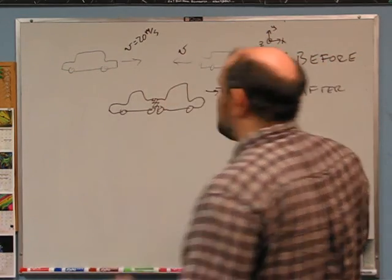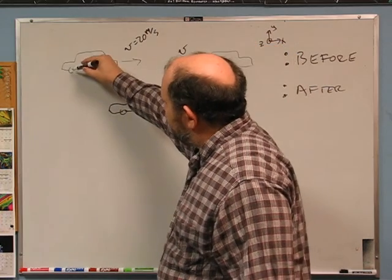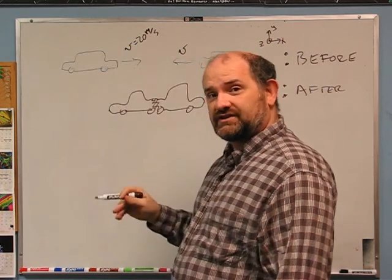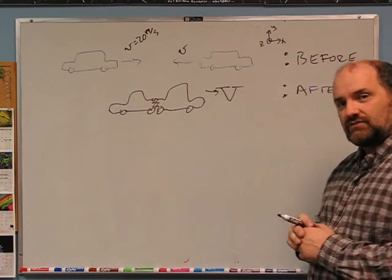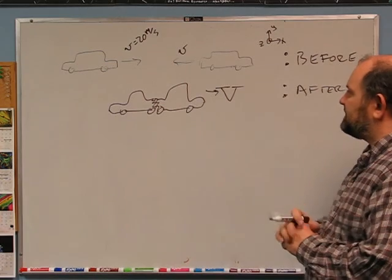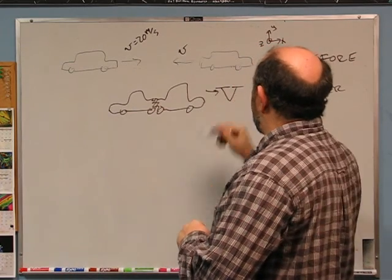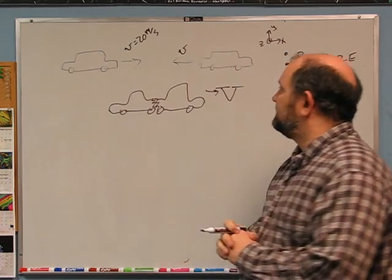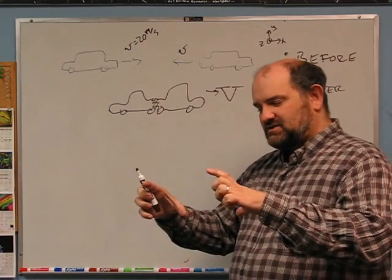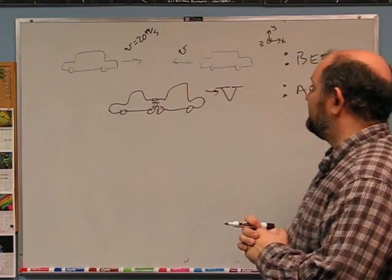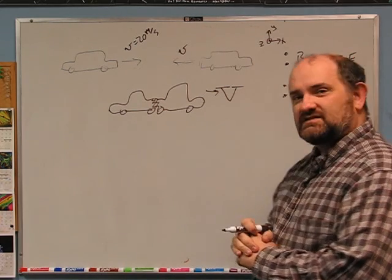We can use conservation of momentum, but first we should think about isolation. This system is not isolated in the y direction because the normal force of the ground and gravity act on the cars — they exactly cancel, and the cars aren't moving in the y direction anyway. So momentum is not conserved in the y direction, but we don't care. In the x direction, there probably is some air resistance and friction from the tires, which would be external forces that break conservation of momentum — but what we do have is momentary isolation.